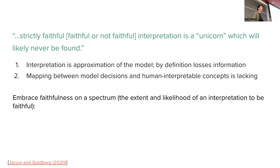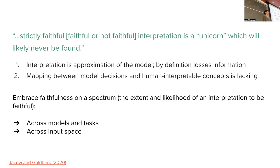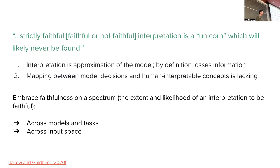If we can't have faithfulness as a binary variable, embrace it on a spectrum across models, tasks, and input space. The papers we discussed are not saying they have a metric that tells you whether an explanation is faithful or not — they are explicit about what kinds of tests they produce. It is important to show this across models and tasks, because for some tasks the explanation was faithful and for others it was completely unfaithful. If you evaluate on only one dataset and claim your method produces faithful explanations, you're in trouble.